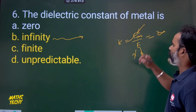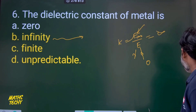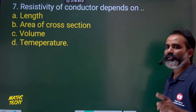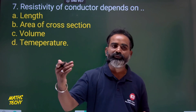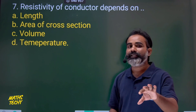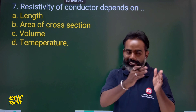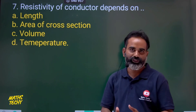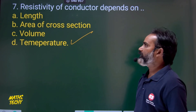Question 7: Resistivity of a conductor depends on what? Don't confuse with resistance. Resistance is proportional to length and inversely proportional to area. But resistivity depends on the nature and composition of the material, and composition is affected by temperature. So resistivity of a conductor depends on temperature — not length, area, or volume. Option D is correct.